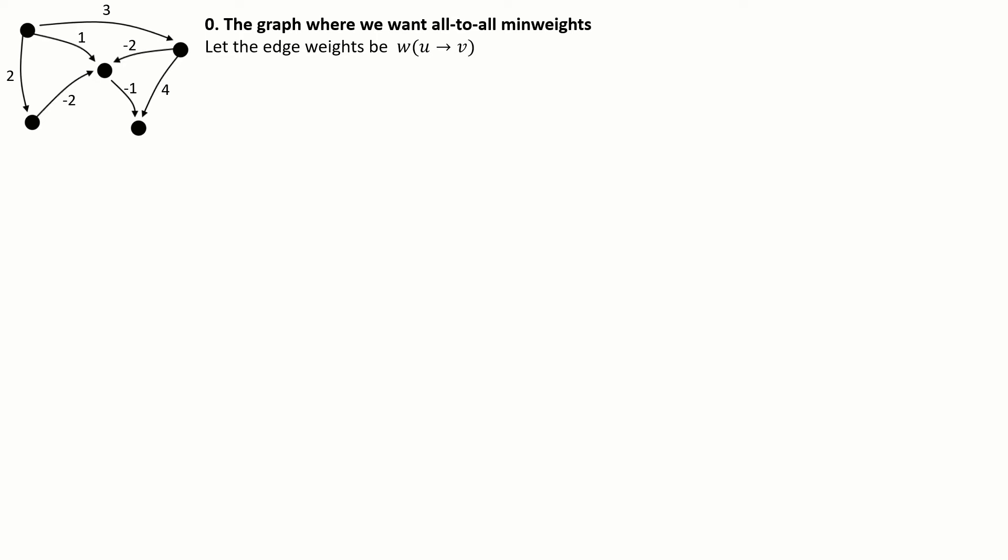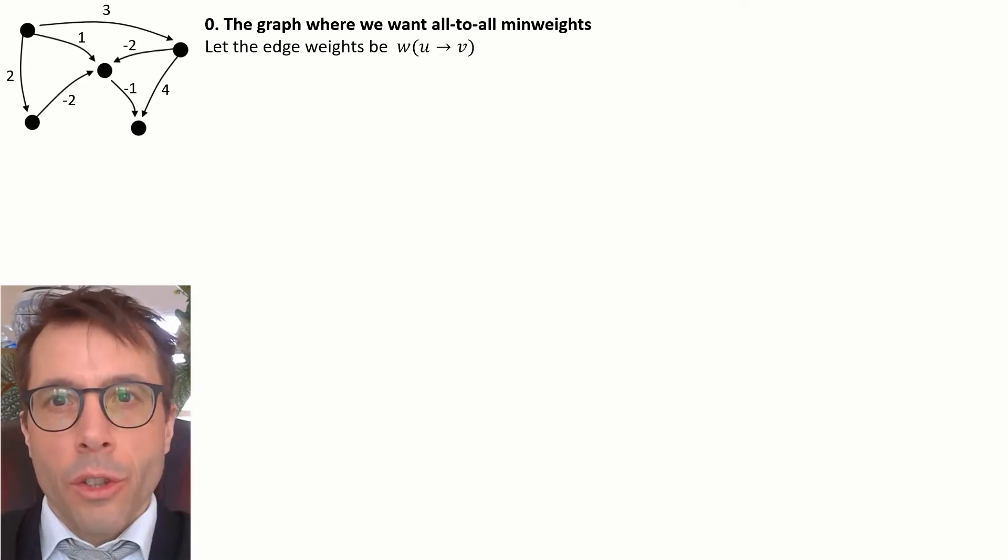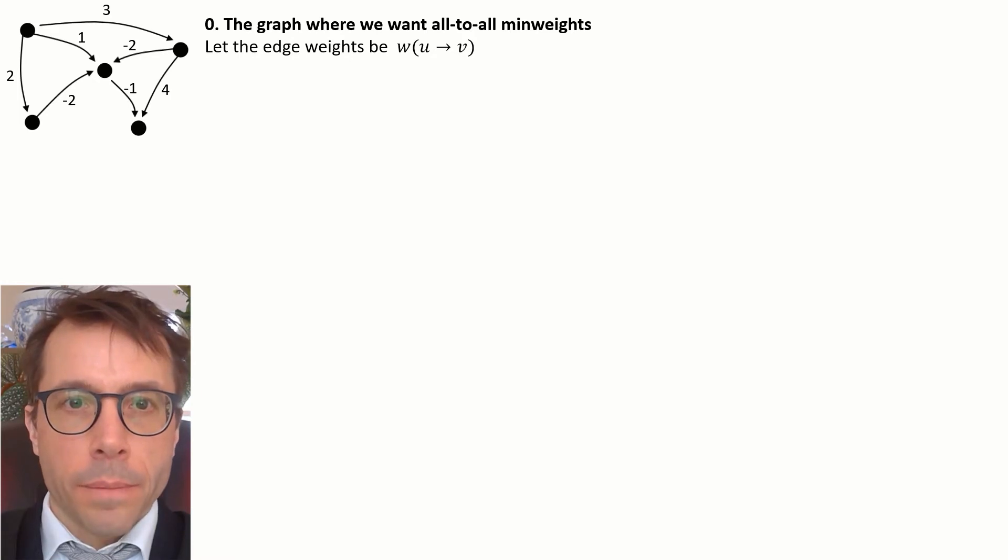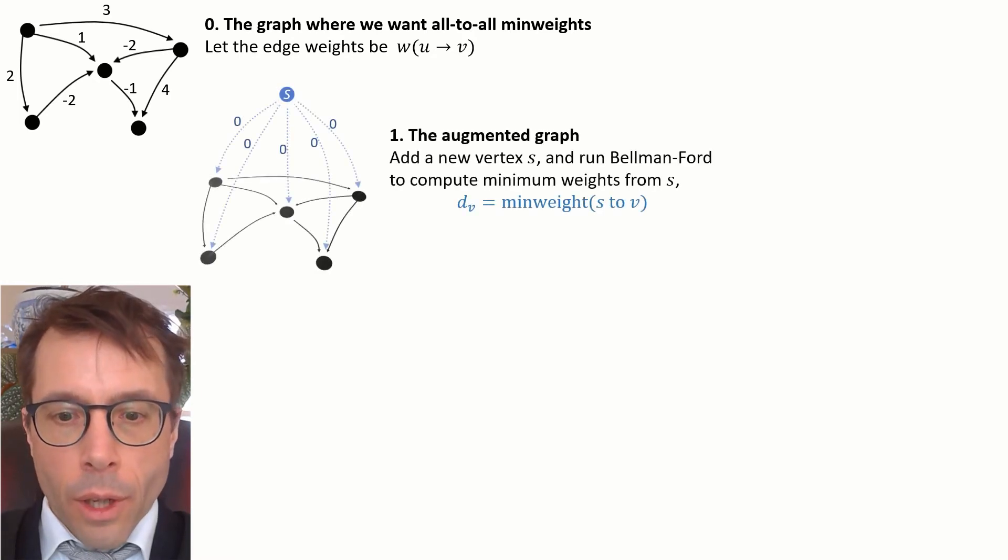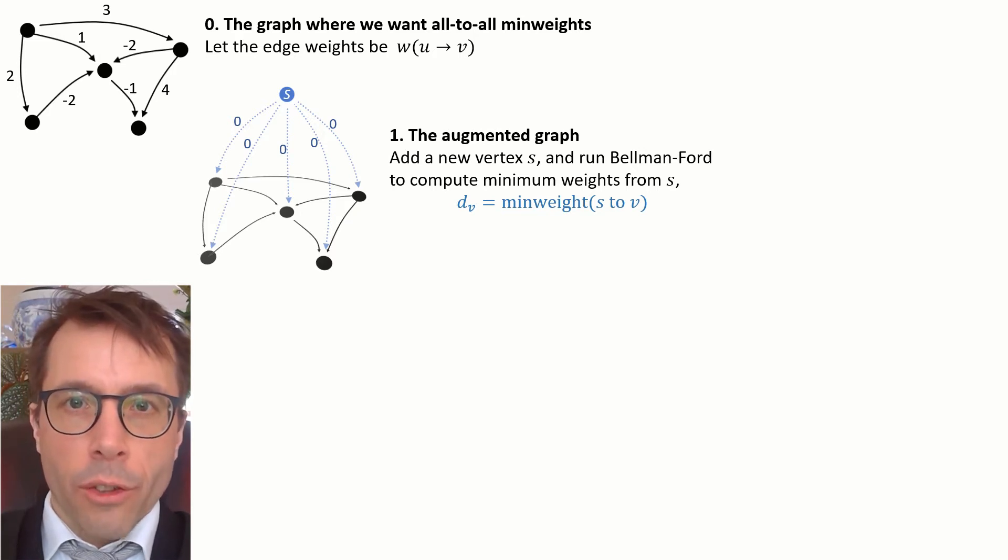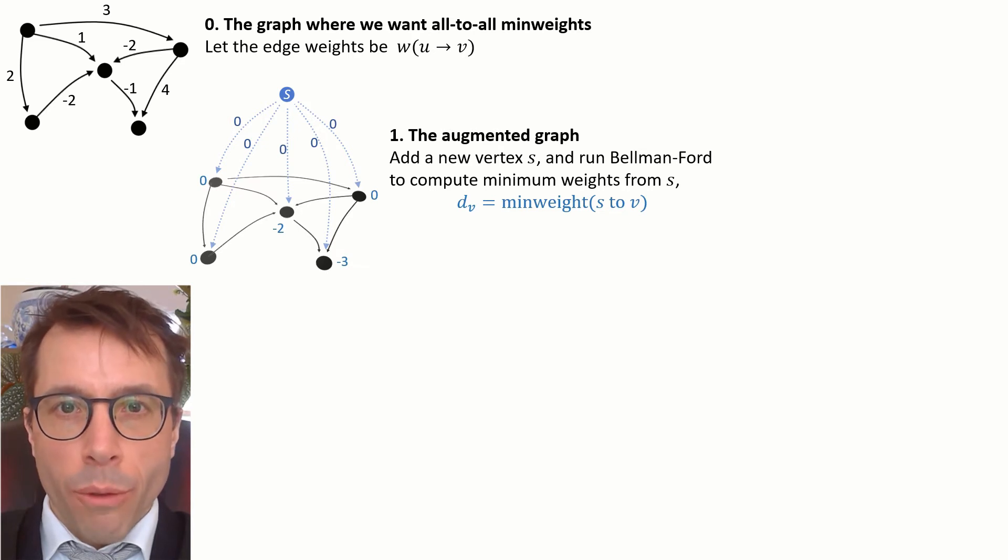First we'll start off with the graph in which we want to compute all-to-all minimum weights. Let me define w of u to v to be the weight of that edge u to v. Next we define an augmented graph which has one extra vertex, call it s, and it's got zero weight edges connecting s to each of the other vertices.